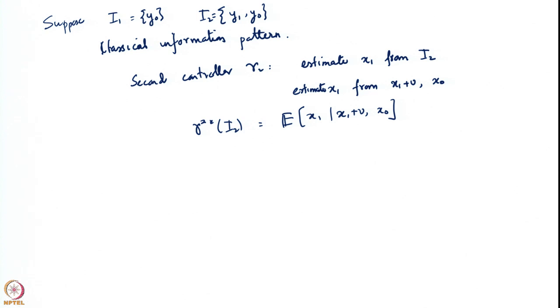Now let us see how this is the optimal control action as far as the second controller is concerned. It always remains this way that he has to estimate the state given the information. Now let us think about how it is that the first controller should play this. The first controller now has to decide γ1 knowing that he has to minimize the first stage cost.